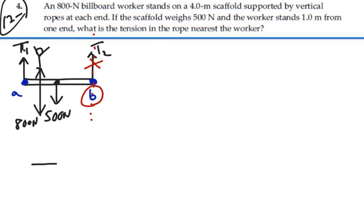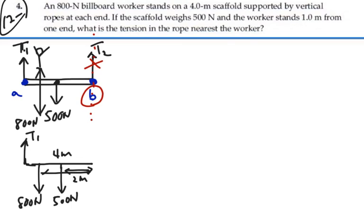we can think of a torque diagram that looks something like this. I've got tension 1 with a moment arm of 4 meters. And I've got this 500 Newtons with a moment arm of 2 meters. And I have this 800 Newtons with a moment arm of 3 meters.